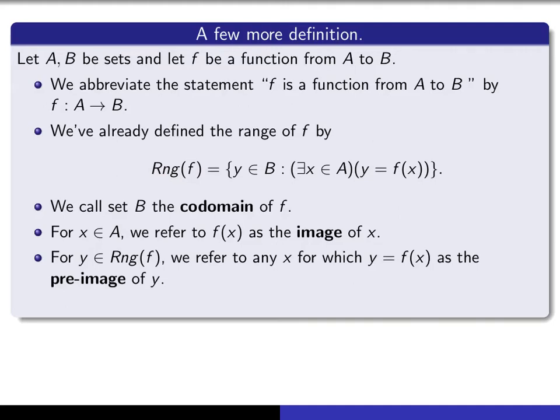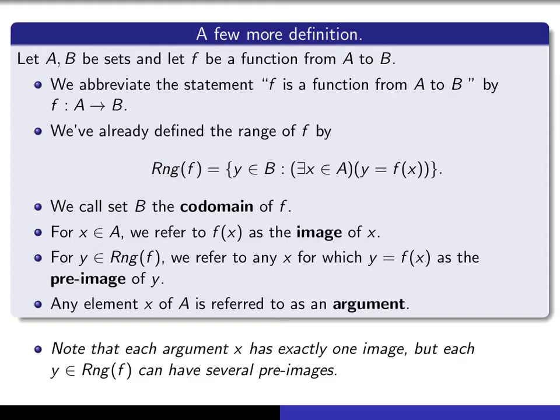If y is an element of the range of f, then we refer to any x for which y is equal to f of x as the pre-image of y. And any element x of A is referred to as an argument. So note that by definition of a function, every argument x has exactly one image, but each y in the range can have several pre-images. It's possible for it to, it doesn't have to, but it might have several pre-images. For each x, there's exactly one f of x. But for each y, there could conceivably be several x's for which f of x is equal to that y.